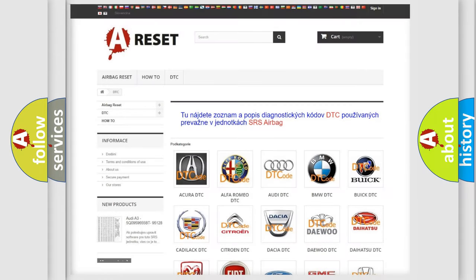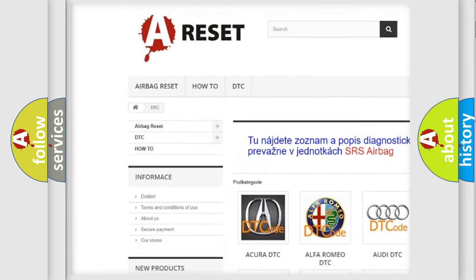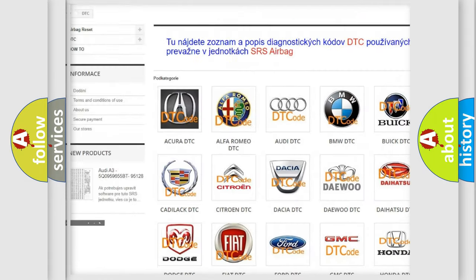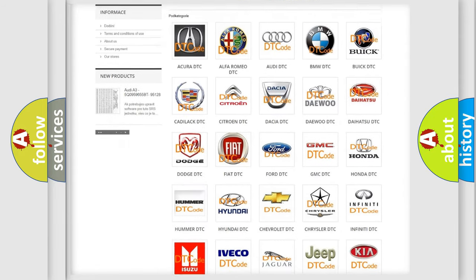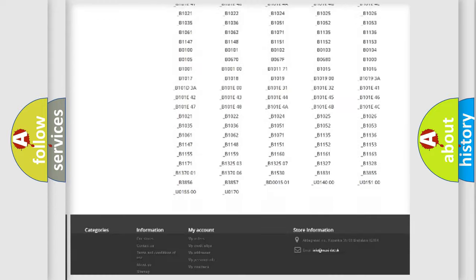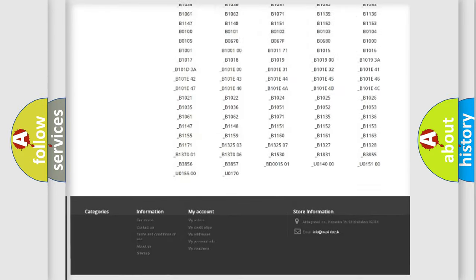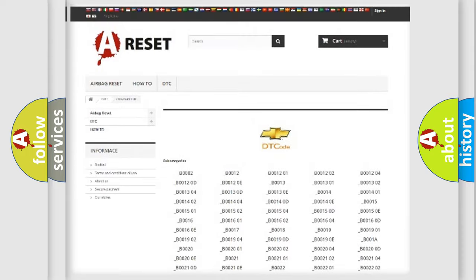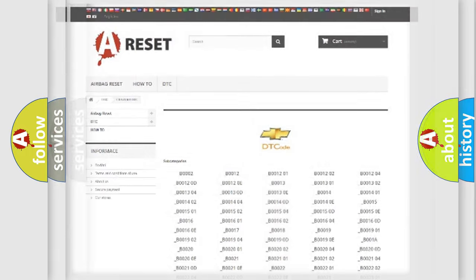Our website airbagreset.sk produces useful videos for you. You do not have to go through the OBD2 protocol anymore to know how to troubleshoot any car breakdown. You will find all the diagnostic codes that can be diagnosed in Chevrolet vehicles. Also many other useful things.